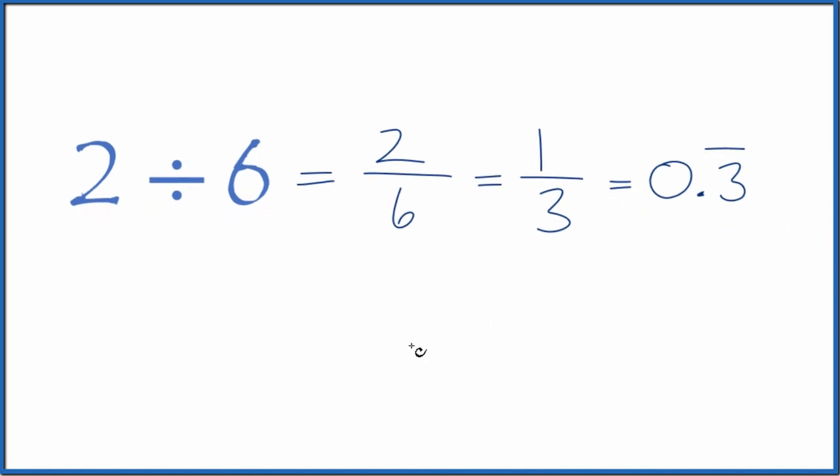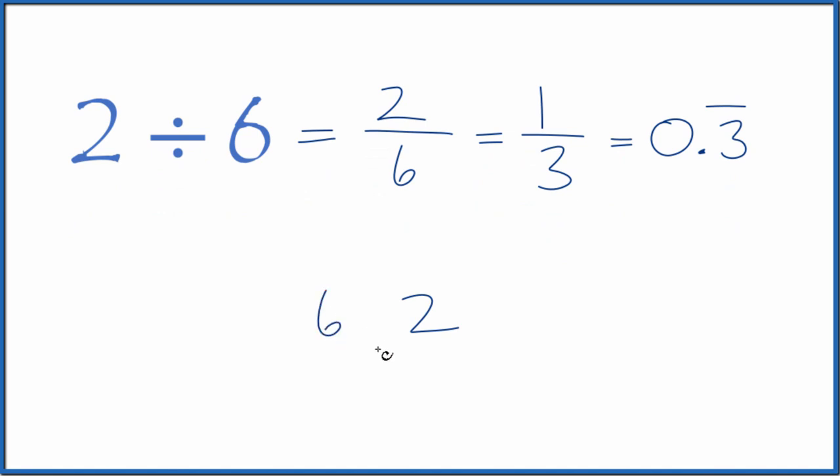You could also take 2 and see how many times 6 goes into 2. 6 doesn't go into 2, but we could call this 20 if we put a 0 with a point up here. Now 3 times 6, that's 18. If we subtract, we get 2.